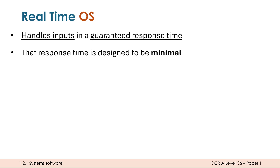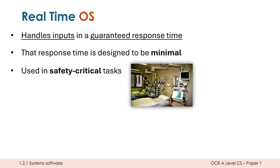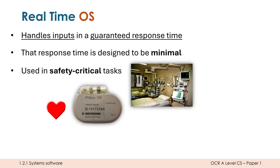A normal OS lets input sit waiting while it does something more important. Whereas a real-time OS — the moment you interact with it or it reads data from a sensor — it responds straight away. These are used in safety-critical tasks, including healthcare, such as intensive care units where computers must read measurements and respond immediately, alerting doctors or administering medicine. A pacemaker, for example, has no additional software — it purely checks the heartbeat and responds immediately if there's an issue.